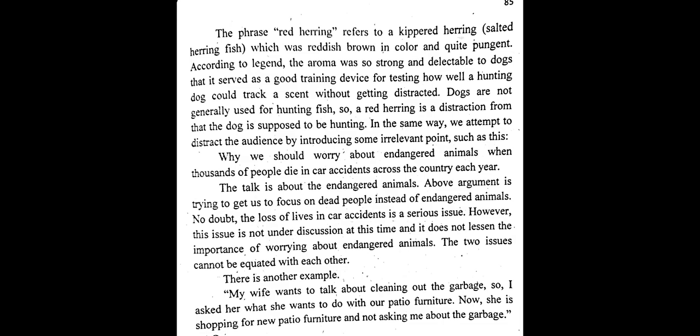Dogs are not generally used for hunting fish, so a red herring is a distraction from what the dog is supposed to be hunting. In the same way, we attempt to distract the audience by introducing irrelevant points — such as: 'Why should we worry about endangered animals when thousands of people die in car accidents each year?' The topic is endangered animals, but the argument tries to get us to focus on car accident deaths instead. No doubt loss of lives in car accidents is a serious issue, however it is not under discussion at this time and does not lessen the importance of worrying about endangered animals. The two issues cannot be equated.